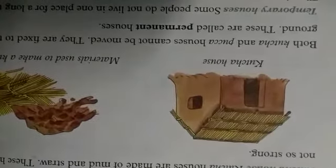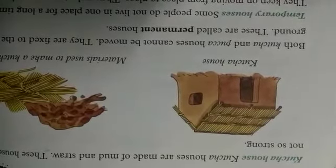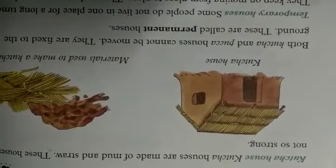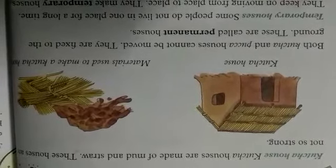K-U-T-C-H-A Kaccha H-O-U-S-E House. Kaccha H-O-U-S-E-S Houses A-R-E are M-A-D-E Made O-F of M-U-D Mud A-N-D And S-T-R-A-W Straw. Kaccha Houses are made of mud and straw.